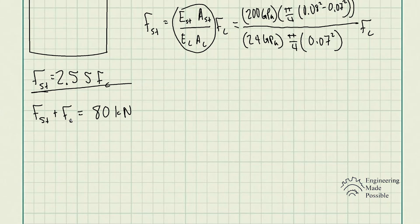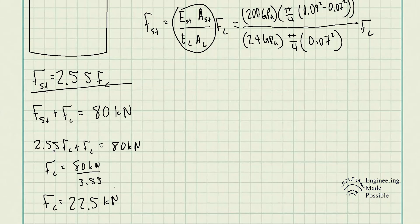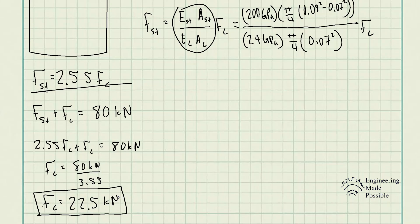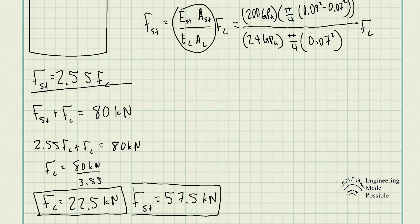We now have two equations with two unknowns. Substituting the steel force expression and solving algebraically, we factor out F_c and get 80 kilonewtons divided by 3.55. The force supported by the concrete is 22.5 kilonewtons, and the force in the steel is 57.5 kilonewtons.